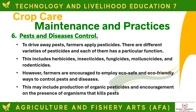For pests and diseases control, farmers apply pesticides to drive away pests. There are different varieties of pesticides, including herbicides, insecticides, fungicides, molluscicides, and rodenticides. However, farmers are encouraged to employ eco-safe and eco-friendly ways to control pests and diseases, such as production of organic pesticides and encouraging organisms that kill pests.